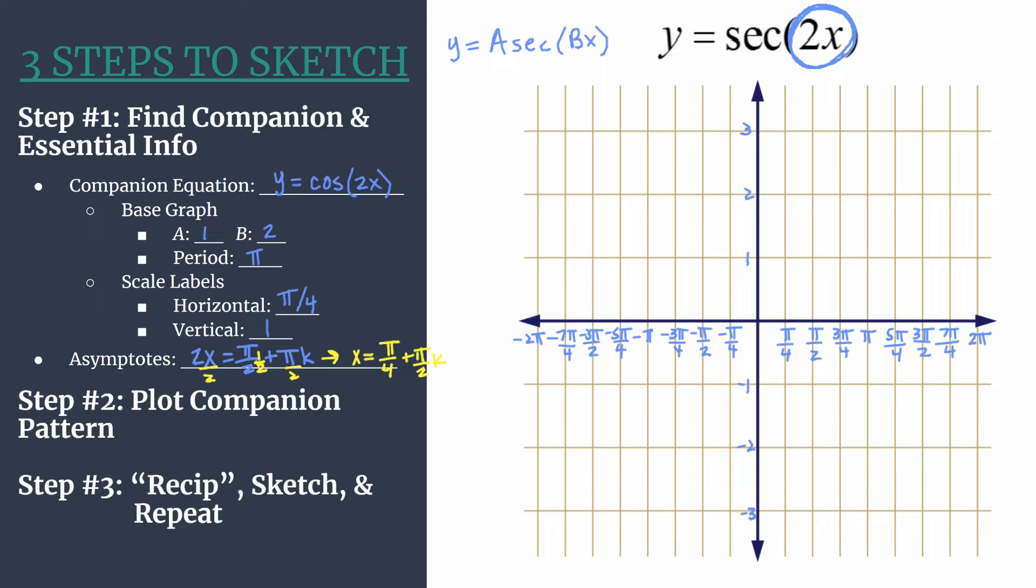Now we have all our information both for our companion equation and our asymptotes. So we're ready for step two where we plot our companion pattern. Basically, we're just going to do a very light sketch of cosine of 2x.